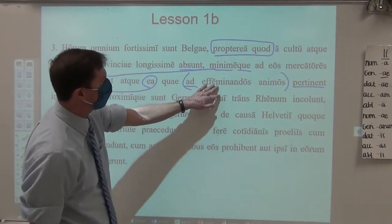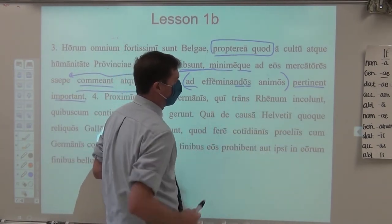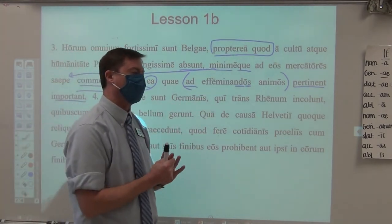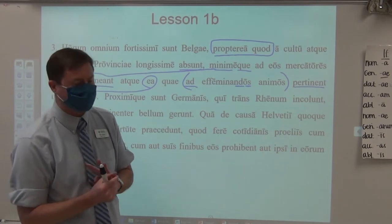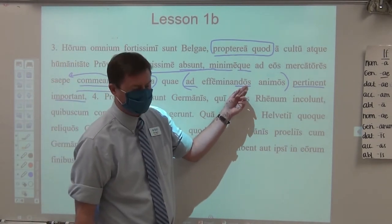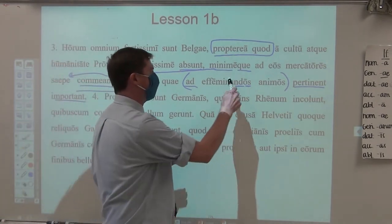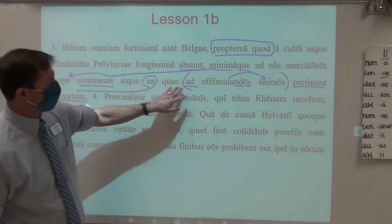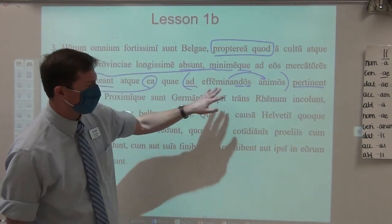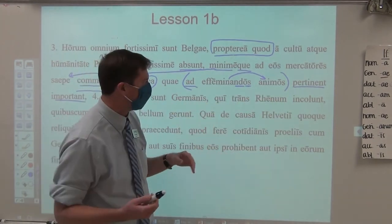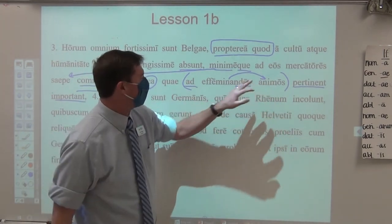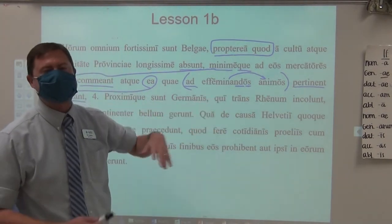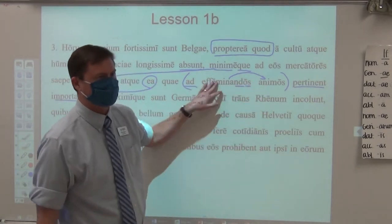Whenever you have 'ad' plus a gerund or gerundive — this is obviously a gerundive — if it were a gerund, remember, it can only have four forms: genitive with a long I, dative with a long O, accusative with 'um,' and ablative with a long O. Any time it's not one of those four endings, it's guaranteed to be a gerundive. Gerundives modify. So least often do they bring in those things which pertain for the purpose of minds about to be sissified — made soft — for the purpose of their minds about to be sissified.